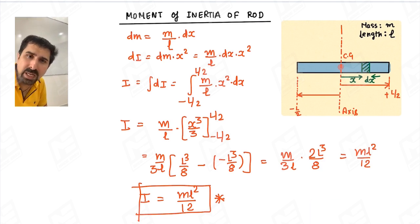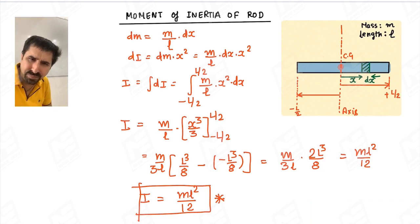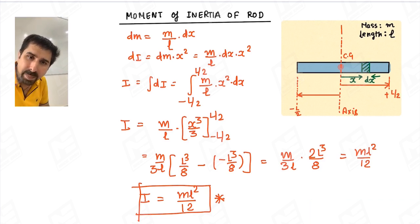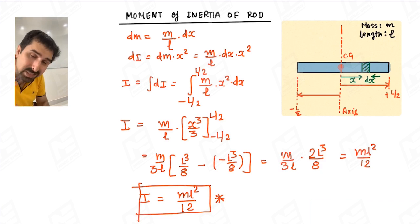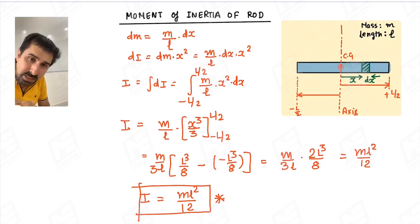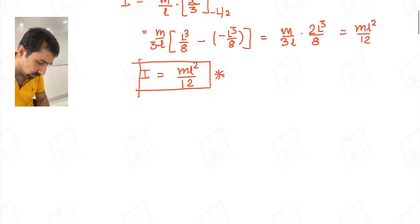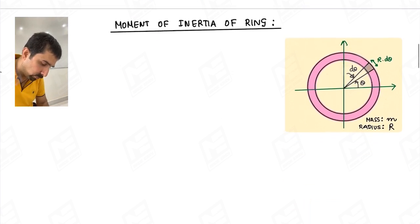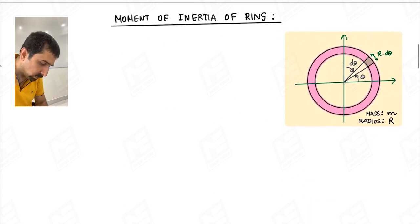This comes out to be ml squared upon 12. So the moment of inertia of this rod about an axis passing through its center and perpendicular to the rod is ml²/12. For any other axis, we will apply the parallel axis theorem and perpendicular axis theorem, which I will discuss later. Now moving one step forward, we will calculate the moment of inertia of a ring.